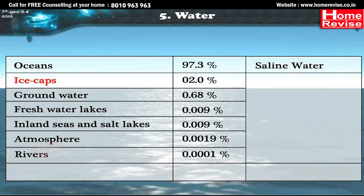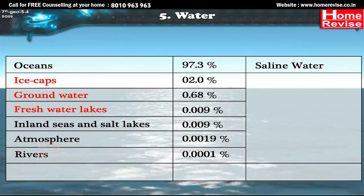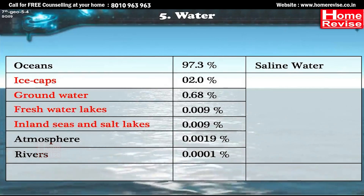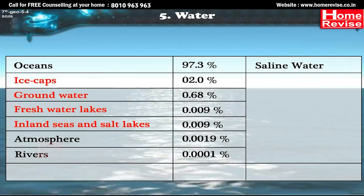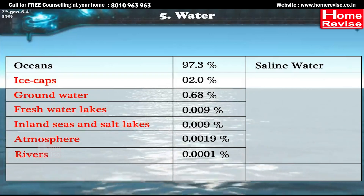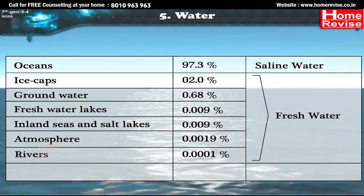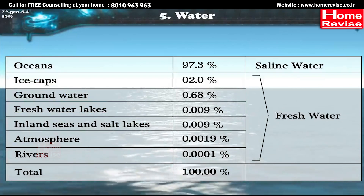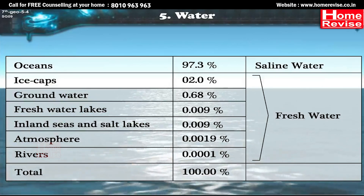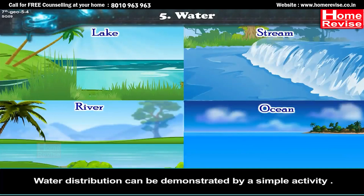Ice caps, ground water, freshwater lakes, inland seas and salt lakes, atmosphere and rivers provide fresh water. Together they make up 100%. Water distribution can be demonstrated by a simple activity.